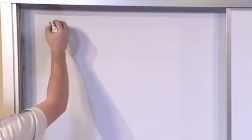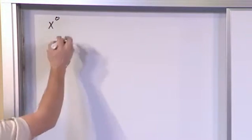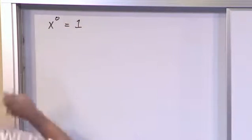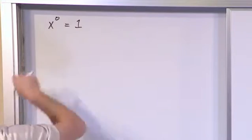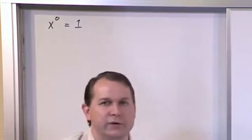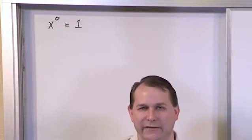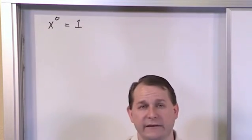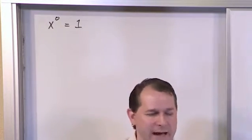So the first thing I'm going to do is put on the board something very important. If you have anything, in this case I'm going to represent it by x, but anything raised to the power of zero, you're always going to get one. Always. If you have three raised to the power of zero it's one. If you have nineteen raised to the power of zero it's one. If you have negative thirty-nine, if you have pi raised to the power of zero, if you have anything raised to the power of zero it's one.